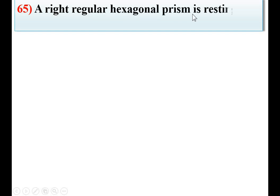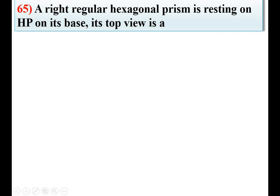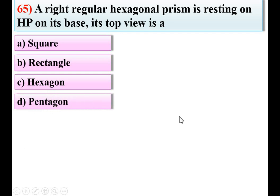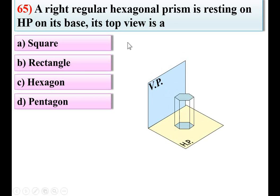Question 65: A right regular hexagonal prism is resting on HP on its base. Its top view is — option A: square, B: rectangle, C: hexagon, D: pentagon. Considering the figure with reference planes HP and VP: the regular hexagonal prism is resting on HP on its base. Looking in the top direction, the top view is also a hexagon. So C is the correct answer.